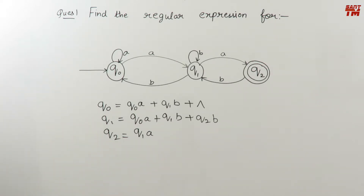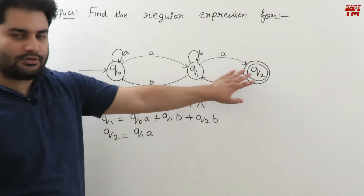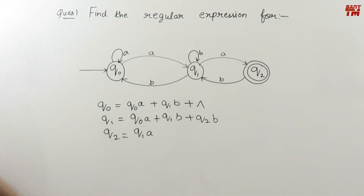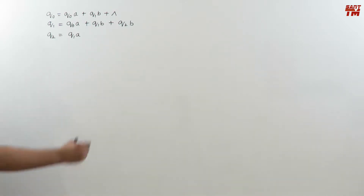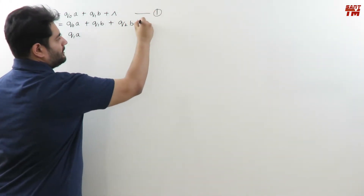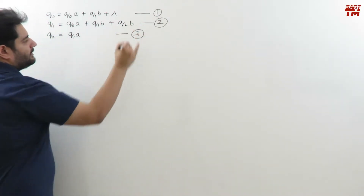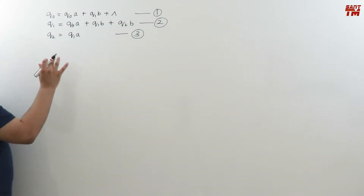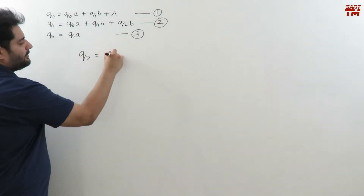Out of these three state equations for all three states, we have to solve the state equation of the final state only. The final state is q2, so we will solve only the state equation of q2. First, label them: equation 1, equation 2, and equation 3. The final state is q2, so we solve: q2 = q1·a.